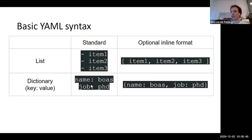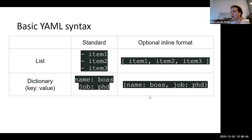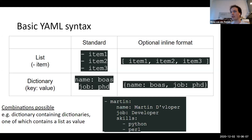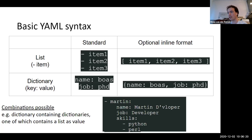You have the same thing for dictionaries, where you have a key — in this case 'name' — and the value assigned to that key. You can also do that in an inline format. YAML also has some other components. Combinations are possible: you can have a dictionary with dictionaries in it, and one of the dictionary values can be a list, so you can get quite complex patterns. The nice thing about YAML is that it is pretty human readable.